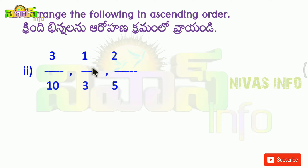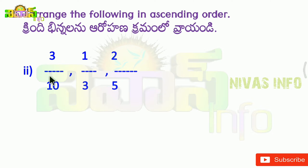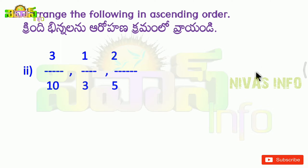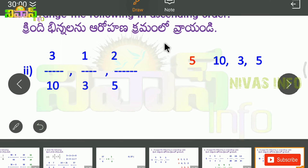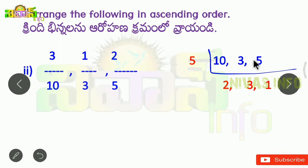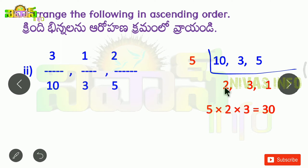The second problem is that we have three fractions in ascending order. If you have ascending order, you can equalize the denominator. If you want to equalize the denominator, you can find the LCM. You can use 10, 3, and 5. You can divide by the denominator and multiply by the LCM. 5 into 2 into 3 equals 30.